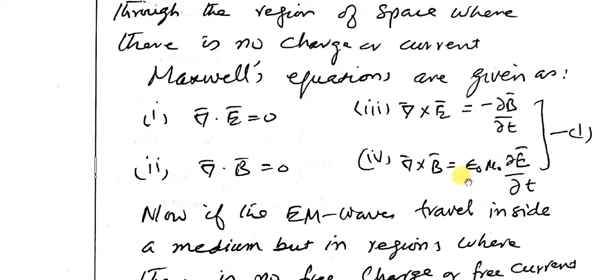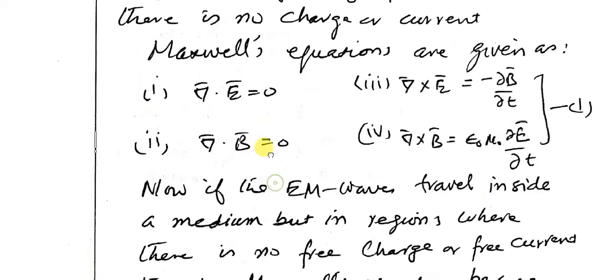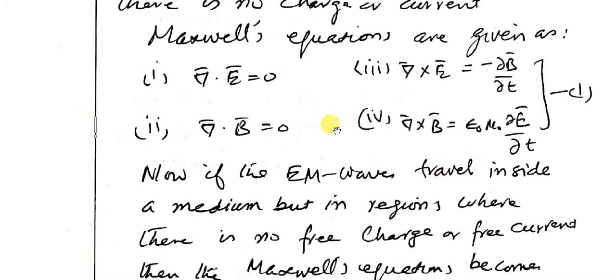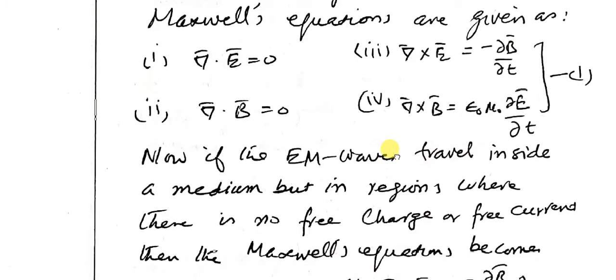For free space we use the electromagnetic properties of the medium as epsilon naught, permittivity of free space, and mu naught, permeability of the free space. This is the four equations that make one set, equation one.